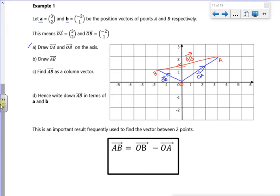Find AB as a column vector. So let's have a look. So A to B goes 1, 2, 3, 4, 5 to the left and 1 down. So minus 5, minus 1 there.